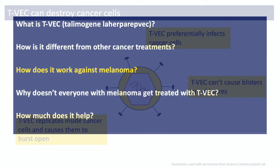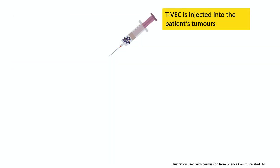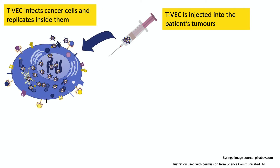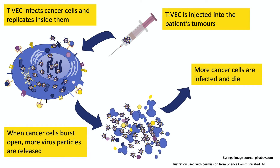That brings us to how TVEC is given and how it works. TVEC is injected directly into the person's tumours — ones that are on the surface of their skin and ones that lie beneath the surface but can be located using ultrasound. TVEC then infects cancer cells and replicates inside them. Eventually the infected cells burst open, releasing more copies of the virus into their surroundings, which then infect more cancer cells, and so on.